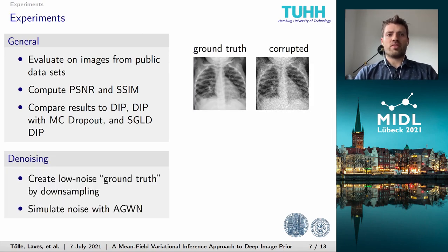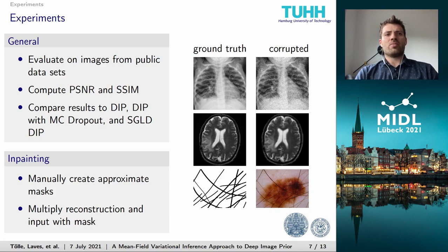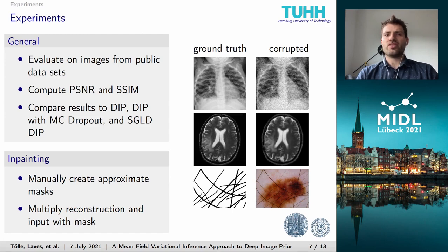For the first problem of denoising, we create a low-noise image by downsampling. Downsampling involves averaging over highly correlated pixels with uncorrelated noise, which decreases the noise level by the downsampling factor. We then simulate the noise inherent in the imaging process with additive Gaussian white noise, which can be used to model most noises. Super-resolution just involves downsampling the image of interest by a factor of 4. Inpainting is the most complicated of the three tasks: we must first create our ground truth manually by roughly tracing the hairs in the pictures. The resulting mask is used to multiply both input and output of the model with zeros in regions where hairs are present.